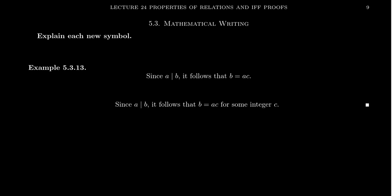It could be improved upon the writing by saying since A divides B, it follows that B equals AC for some integer C. It's a really good idea to specify what is this new symbol C. A and B, we already know what they are, but what is C? We should say that.